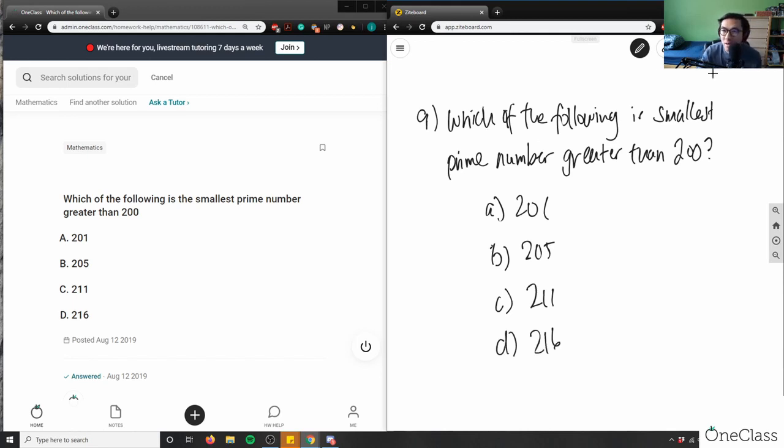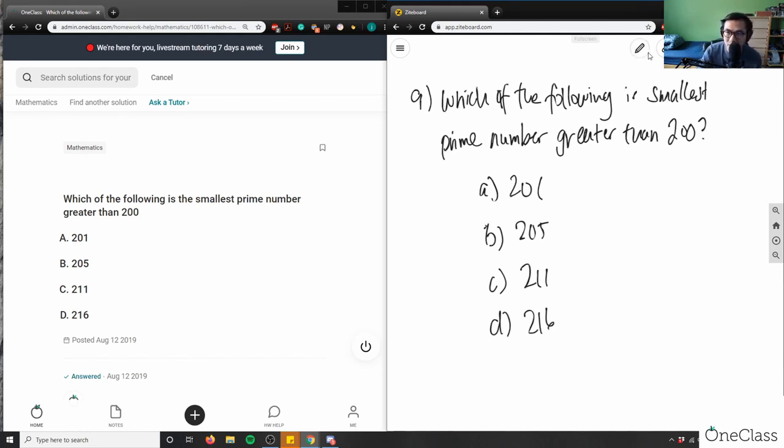Right off the bat, D here is incorrect. D is an even number, so I can divide that by 2, which means that's not a prime number. Remember, the definition of a prime number means that only factors are 1 and itself. So 216, I can divide this by 2, therefore D is the wrong answer because I can divide this by 2, so 2 is my factor.